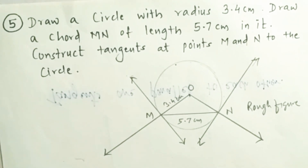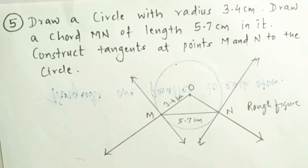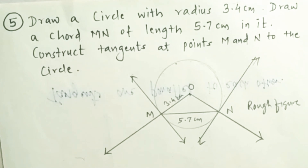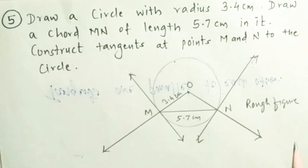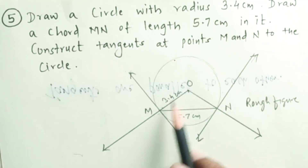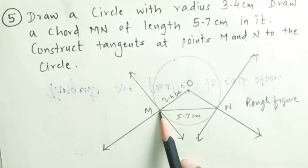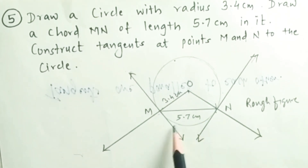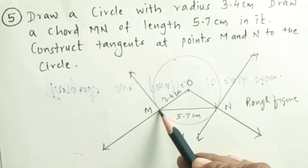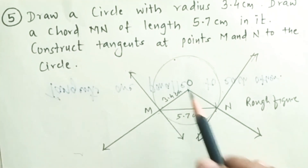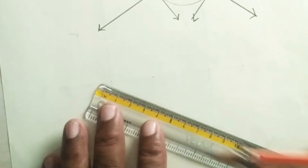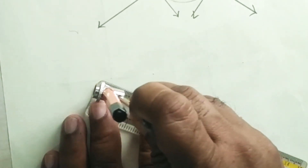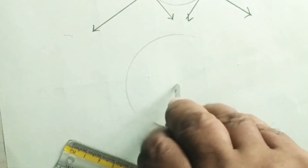Fifth example: draw a circle of radius 3.4 centimeters, draw a chord MN of length 5.7 centimeters, and construct tangents at points M and N to the circle. The rough diagram shows a circle with center O of radius 3.4 centimeters. Take point M on the circle, draw chord MN of length 5.7 centimeters, and from points M and N draw tangents using the center of the circle. Take the compass distance equal to 3.4 centimeters and draw the circle.